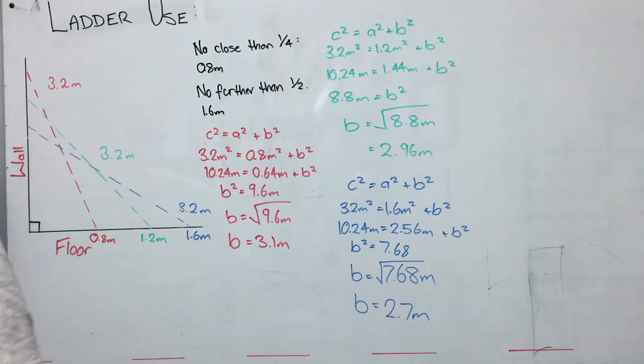So good. And what we do probably lastly for this question, is we just write a brief statement that with a length of 0.8 metres away from the wall, or a distance, the ladder will go 3.1 metres high. At a distance of 1.2 metres away from the wall, the ladder will fall 2.96 metres up the wall. And if the ladder is at its furthest distance, it's allowed at 1.6 metres, it'll be 2.7 metres high. And that's probably all that we'd expect. It's asking students to be able to use this equation of Pythagoras' theorem and manipulate to get their answer.